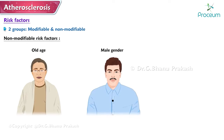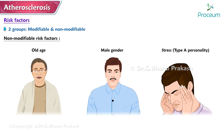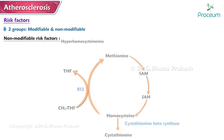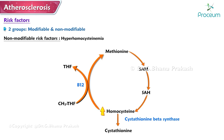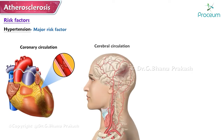Non-modifiable risk factors include old age, male gender, stress, Type A personality, and hyperhomocysteinemia — which is due to deficiency of folate or vitamin B12, or hereditary homocystinuria. Hypertension is a major risk factor for the development of atherosclerosis, particularly in the coronary and cerebral circulations.